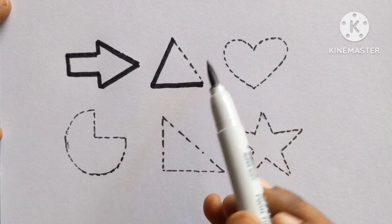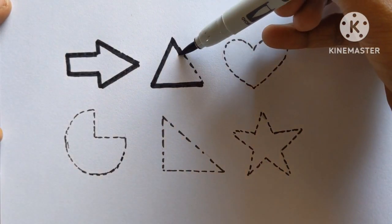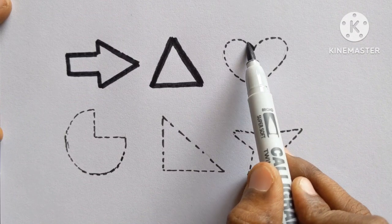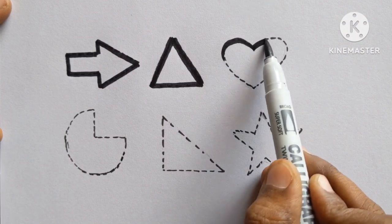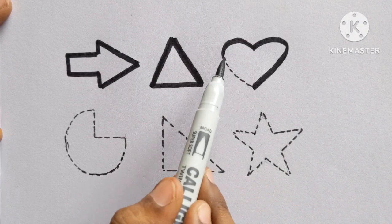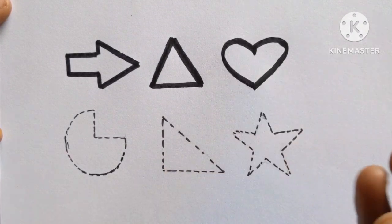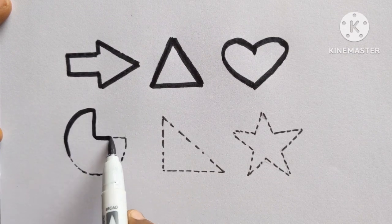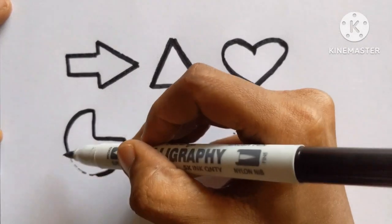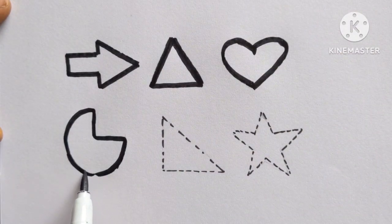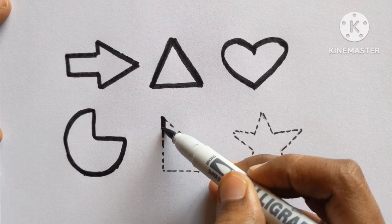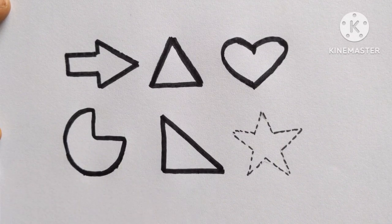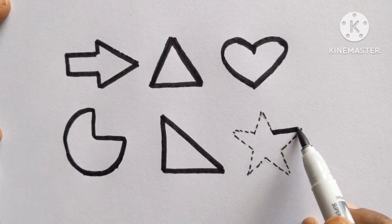Arrow. Tick tock, tick tock. Triangle. Heart. Tick tock, tick tock. Pie. Right angle triangle. And star.